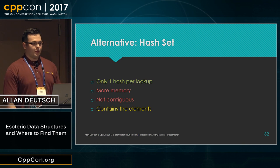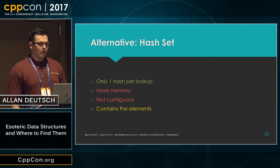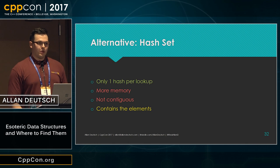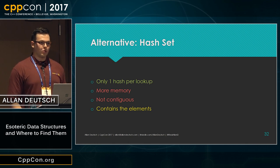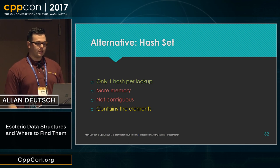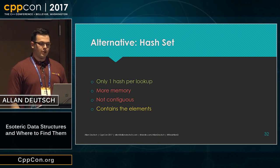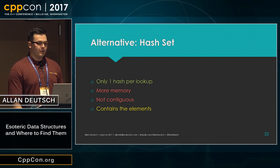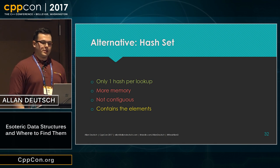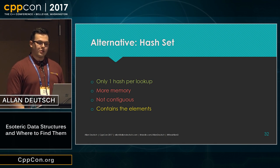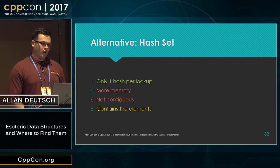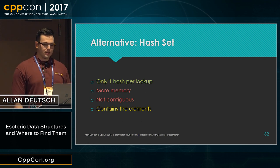The most common alternative would be something like a hash set, where there's only one hash per lookup, which is typically going to be better than a bloom filter. But it's going to use more memory since it has to store all of the elements, and they're generally not contiguous since they're typically implemented as a red-black tree. A hash set also contains the elements themselves, which in some cases could be quite desirable, in others — such as privacy cases — it might not.